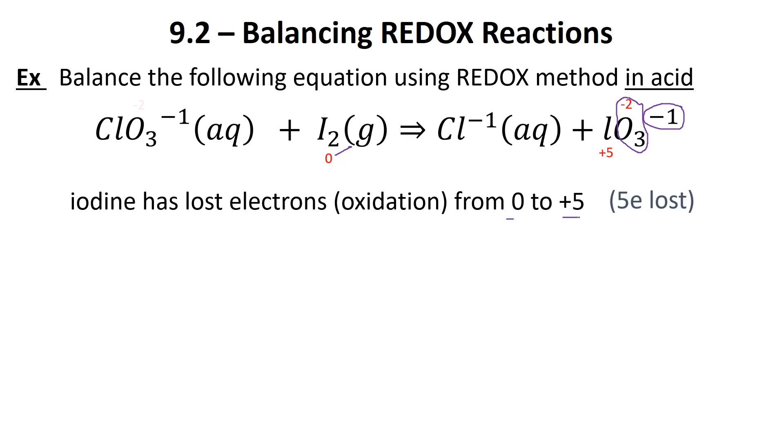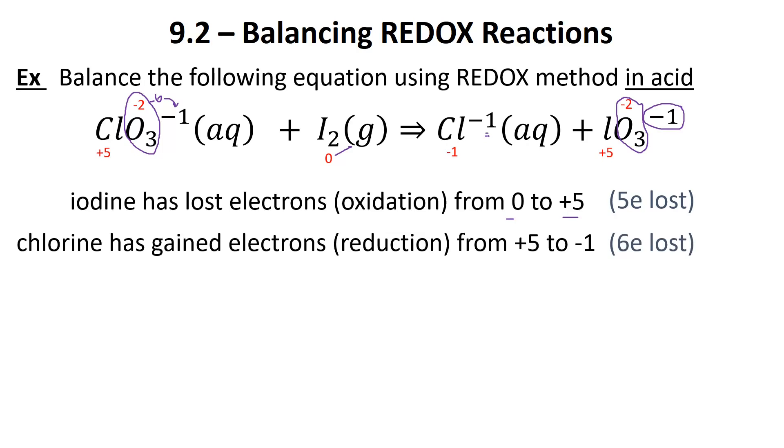Five electrons lost. Over on the left side, we've got our -2 set up for oxygen. That's -6, but it should equal -1. So what's the charge of chlorine? It also happens to be +5. As we look to the other side, we've got chlorine as -1. What's chlorine done? Chlorine has gained electrons to go from +5 to -1. We've had a gaining of six electrons. That should say gain, not lost.